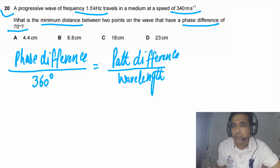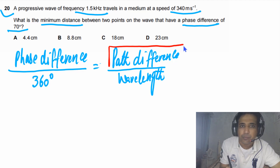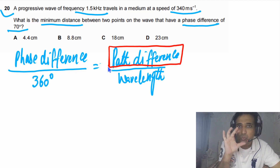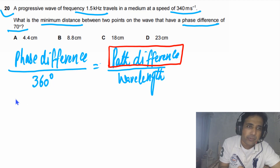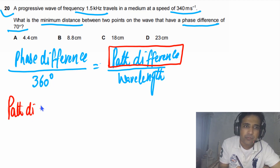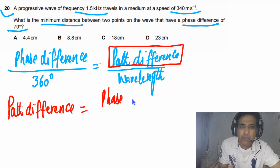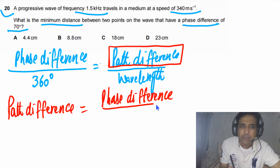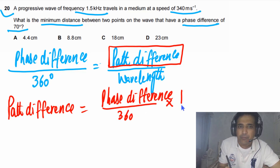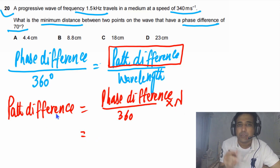We need to find the distance, meaning we need to find the path difference between two points. We can rearrange this, so path difference equals phase difference divided by 360 degrees, multiplied by wavelength lambda. If we have the value of lambda, we can find the distance between two points on the wave.